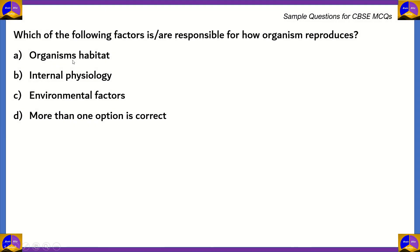Let's look at another question. Which of the following factors is or are responsible for how the organism reproduces? A — organism habitat, B — internal physiology, C — environmental factors, D — more than one option is correct. There are two ways to get this — the easy way or the easiest way. Let's look at both of them.